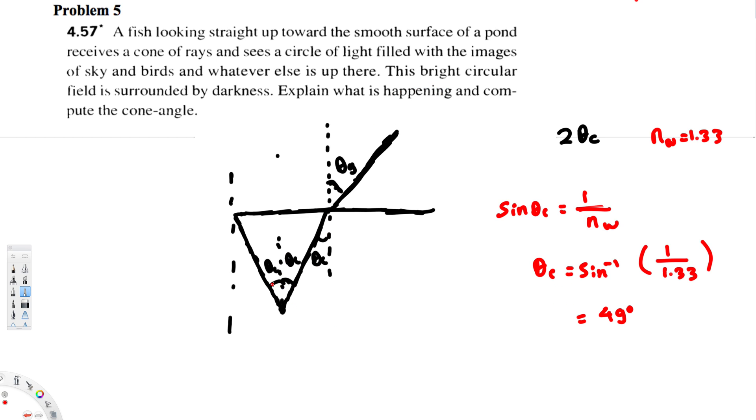Here they are asking to find the total angle of this cone shape, so that's going to be 2 theta_c. 2 theta_c is going to be 98 degrees. 98 degrees. And that's it, that's how we do this kind of problems. I hope you guys find this video helpful. See you next time.